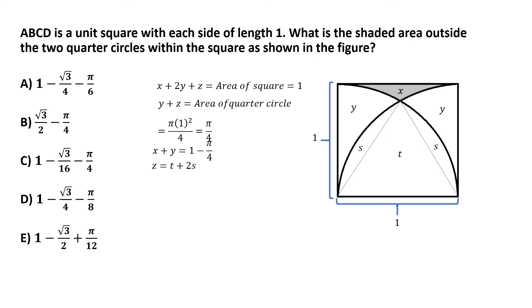What is the area t? Each side of the triangle is essentially equal to the radius of the quarter circle, because the quarter circles are centered at the corners of the square. Joining those line segments draws a line from the center of the quarter circle to the circumference — that's simply the radius, which is one. So the triangle formed in the middle is an equilateral triangle, and its area is root 3 divided by 4 times side squared. Since the side is 1, t equals root 3 by 4.